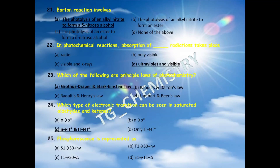The last question: phosphorescence is best represented as — option A) S1 to S0 plus emission of light, B) T1 to S0 plus emission of light, C) T1 to S0 plus emission of heat, D) T1/S1 to T1 plus emission of heat. Phosphorescence involves the electronic transition from T1 to S0 accompanied by emission of light, so option B is the correct answer.